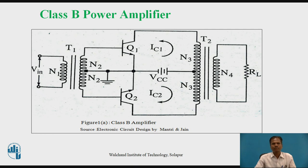At the input side of the amplifier, transformer T1 is a driver transformer. It is used to couple the input AC voltage signal to the base of the two transistors Q1 and Q2. At the output side, transformer coupling is also used; transformer T2 is used to connect the output load RL. The input driver transformer T1 produces two voltage signals of equal magnitude and opposite polarity, which are provided to transistors Q1 and Q2.